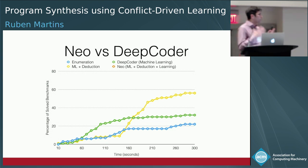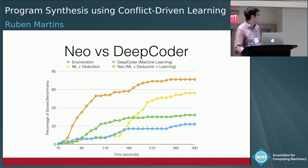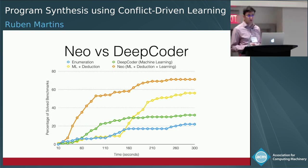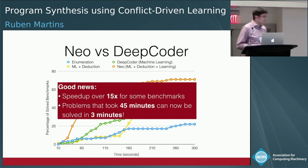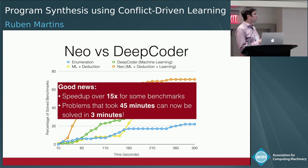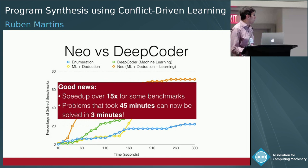The full NEO framework — combining machine learning, deduction, and learning — solves significantly more benchmarks and is much faster. We see speedups over 15x for some benchmarks when comparing machine learning plus deduction against the full system. Problems that previously took 45 minutes can now be solved in three minutes. Learning is a very powerful technique.